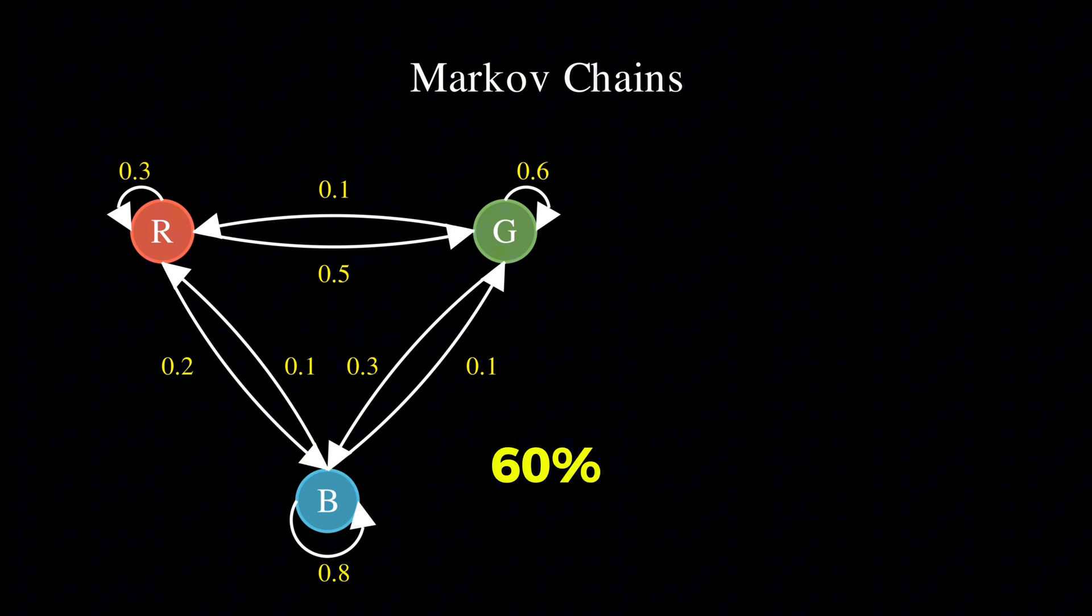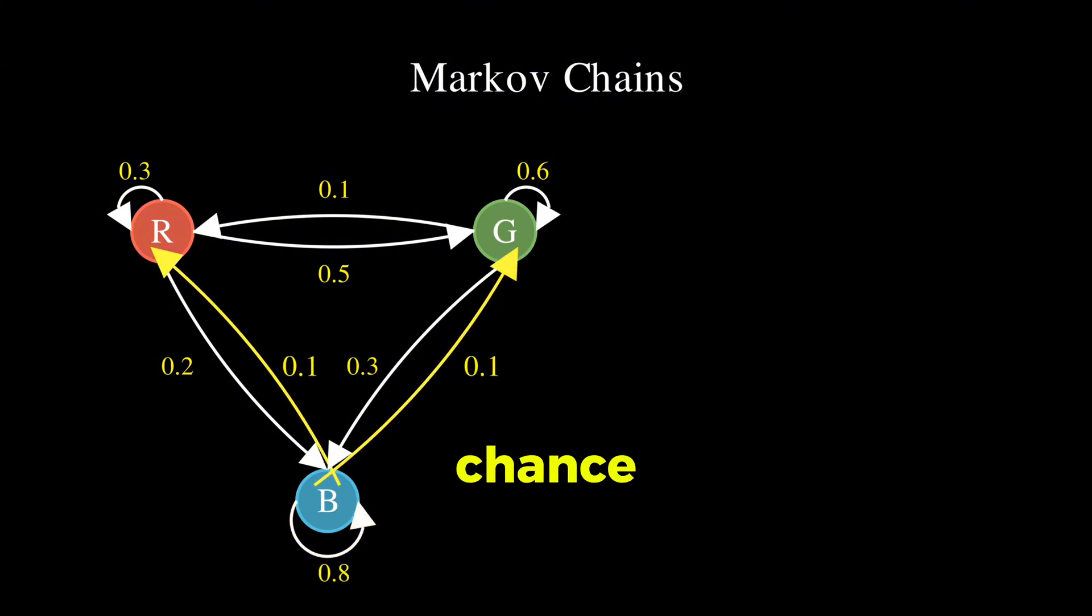Similarly, green has a 60% chance of staying in green, a 30% chance of moving to blue, and a 10% chance of moving to red. And finally, blue has an 80% chance of staying in blue, and a 10% chance of moving to either red or green.